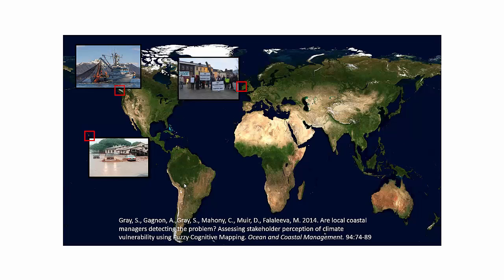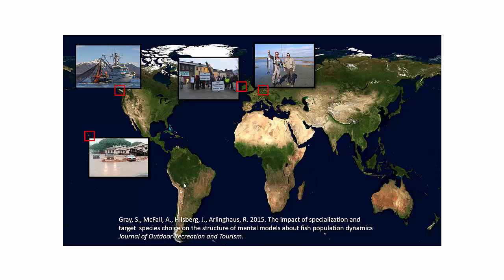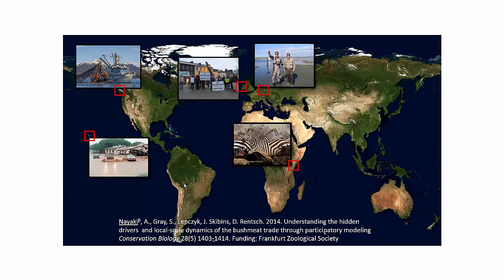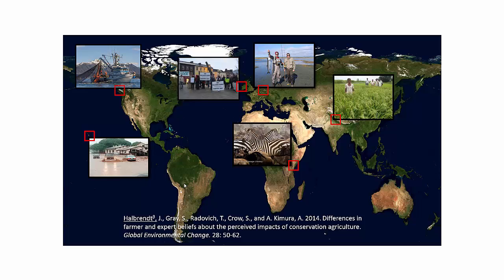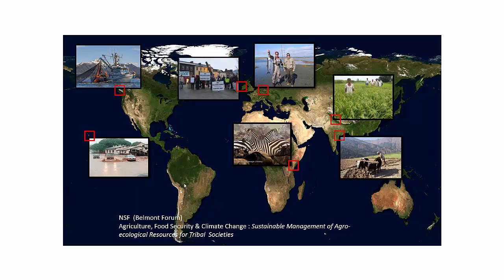We've used it to understand how local coastal systems are going to be impacted by climate change, as a way to bring together different marine sectors — fisheries, energy, and recreation experts — to model their community and understand how they're going to be impacted and what they can do to adapt. We've used it in recreational angling in Germany to understand how different fishery managers think about ecosystem dynamics and how those different ways of thinking lead to different management preferences. We've used it in Tanzania in the Serengeti National Park to understand how bushmeat hunters, sellers, and consumers understand the black market trade of zebra and wildebeest. And we've used it to understand farmer decision-making in Nepal and India to understand how different ways of thinking influence different farming behaviors and practices.